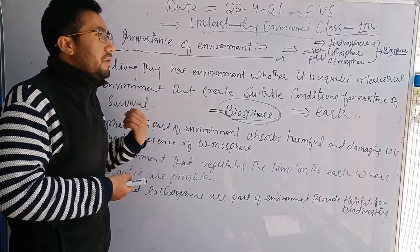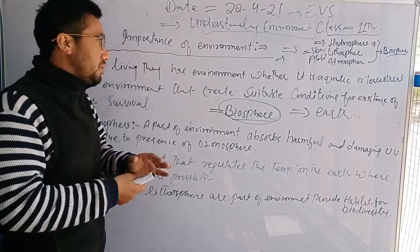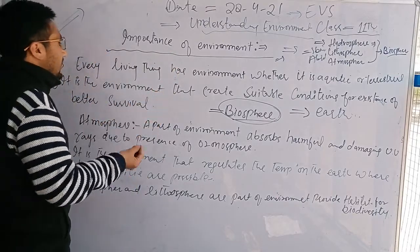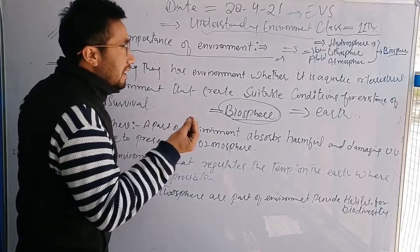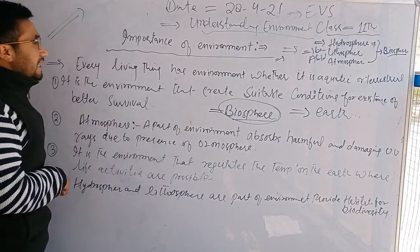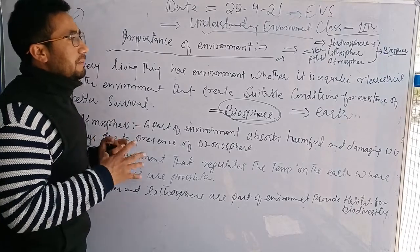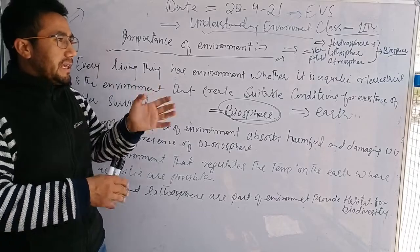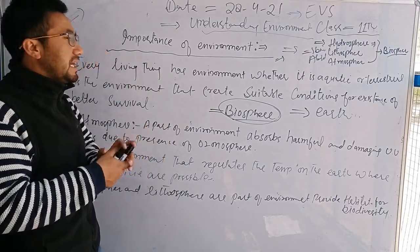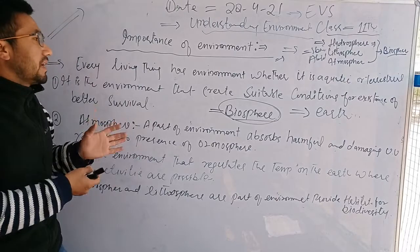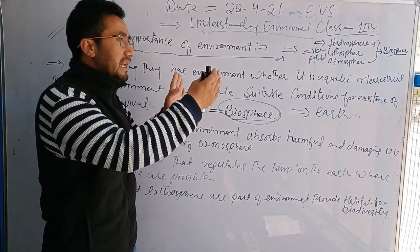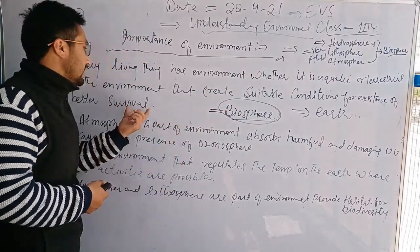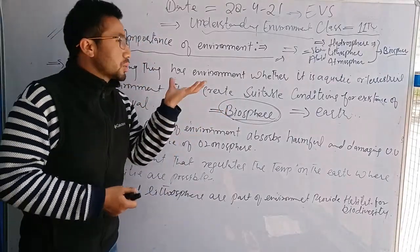All things like the hydrosphere and atmosphere are important to live in the environment. It is the environment that creates suitable conditions for existence and better survival. This is the environment — on the Earth's surface and beneath it — where living beings can comfortably exist and survive.